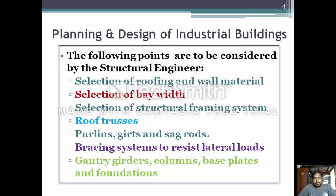What are the required things for the design of an industrial building? We should plan and design the industrial building considering the following: selection of roofing and wall material, selection of bay width, selection of structural framing system, and the roof truss should also be selected.